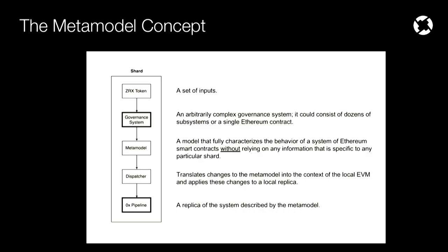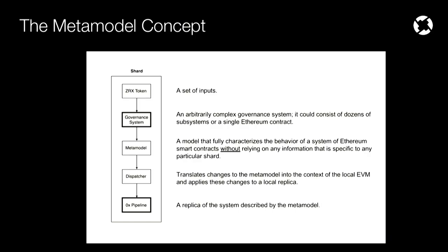Then we have what we're calling a dispatcher. A dispatcher looks at the metamodel, and any time the metamodel is changed, it translates that generalized model — the changes to that model — into the context of the local shard or blockchain that the dispatcher is located on. Once it has translated those changes into the local address space, it applies those changes to the stateful system of smart contracts. That's how we have synchronization of all these stateful systems across different shards or blockchains.